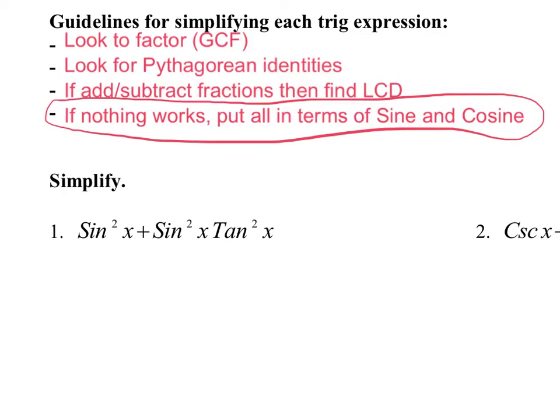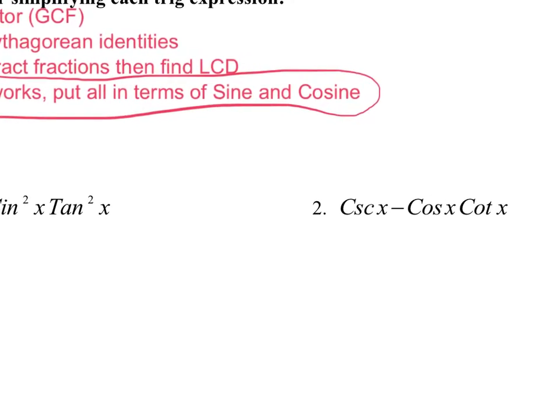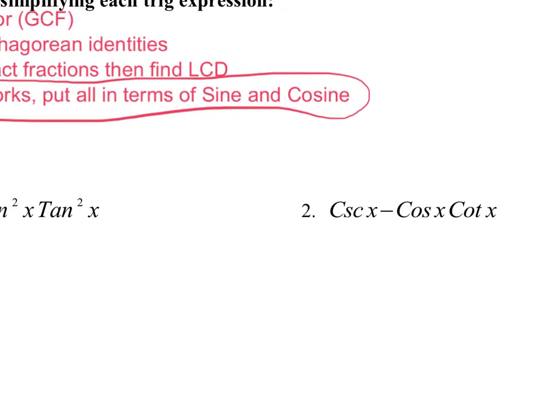The last video we did number one, so I'm going to do number two right now. If I go through the guidelines, there's no GCF. I have three different trig functions — cosecant, cosine, and cotangent — so I can't pull out a greatest common trig function. There's no Pythagorean identities because nothing's squared. And there are no fractions to find an LCD for, so the only thing I can do is put it in terms of sine and cosine.